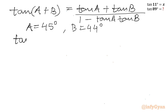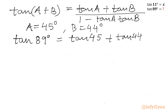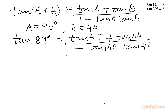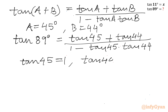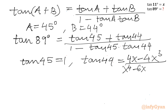So we will get our required expression. Tan 89 degrees on the left-hand side. The RHS will be tan 45 plus tan 44 divided by 1 minus tan 45 times tan 44. We know the value of tan 44 which we have calculated. We know tan 45 is 1, and tan 44 degrees equals 4x minus 4x cubed divided by x to the power 4 minus 6x squared plus 1.